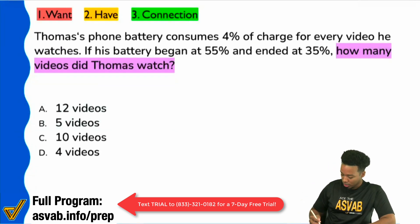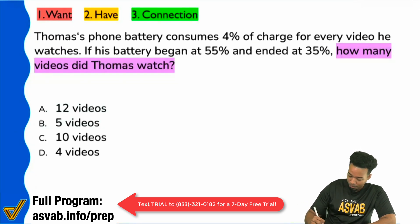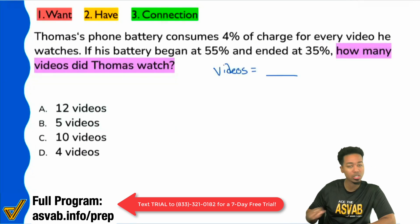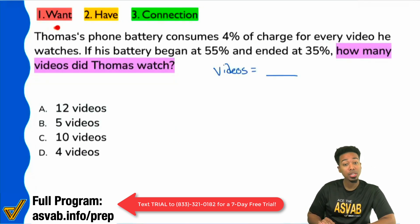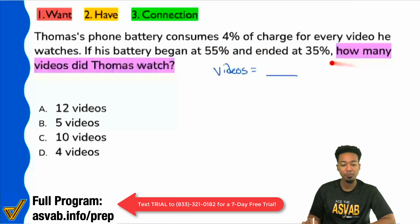What we're going to do is read through the information, remembering that we just care about videos — videos equals blank, that's all I care about. So when I read through the information: Thomas's phone battery consumes 4% of charge for every video he watches. If his battery began at 55% and ended at 35%, how many videos did Thomas watch?